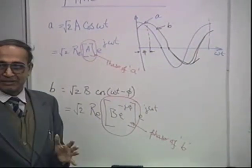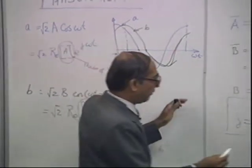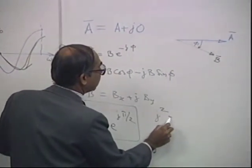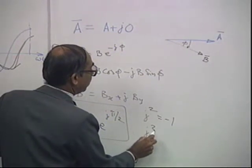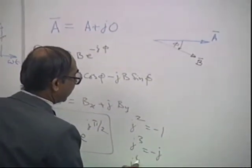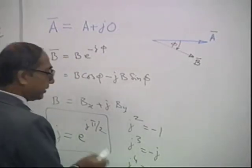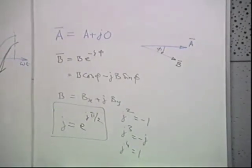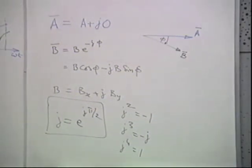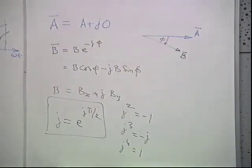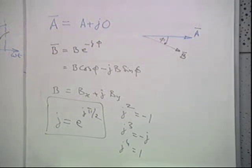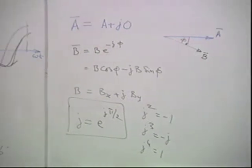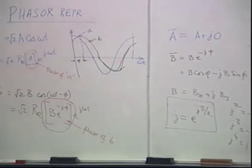We know that j² = −1, j³ = −j, and j⁴ = 1. In other subjects like physics they use i, but in electrical engineering we use j. The reason is that electrical engineers use i for current, so they cannot afford to use i for the imaginary operator as well.